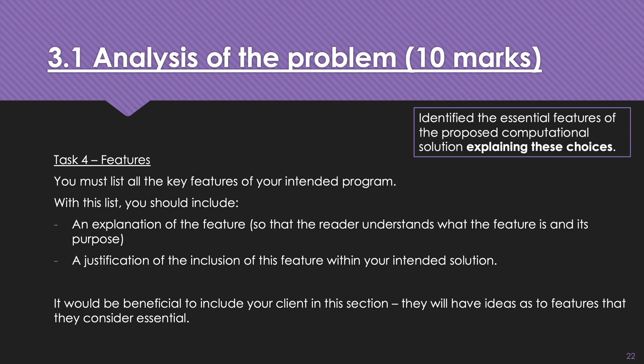Task four, features. And it says there, identify the essential features of the proposed computational solution, explaining the choices. So now you're starting to identify the features that you're going to have in your program. You should include an explanation of the feature so the reader understands what the feature is and its purpose. This is not a list. This is a detailed list with a significant explanation. A justification for the inclusion of this feature within your intended solution. It would be beneficial to include your client in this section. They will have ideas as to features they consider essential as well. So if you can, this is the time to start touching base with somebody saying, can you be my client?